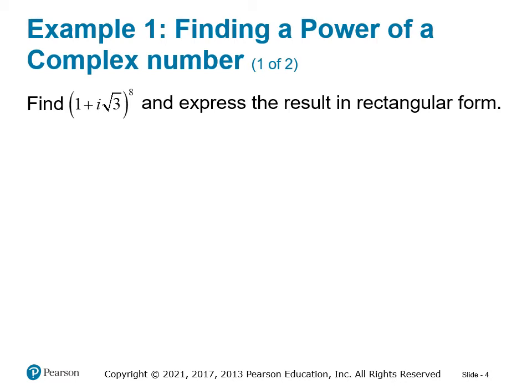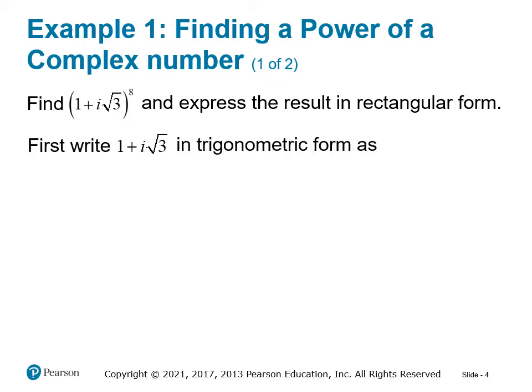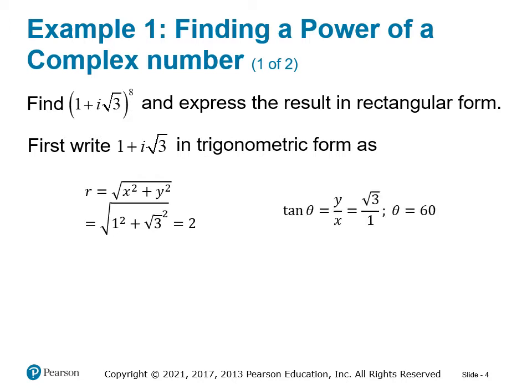Let's do an example. Find (1 + √3·i) raised to the 8th power and express the result in rectangular form. First we have to write 1 + √3·i in trig form. We know r equals the square root of x² + y², so √(1² + (√3)²) = 2. The tangent of theta equals y over x, which equals √3 over 1, giving our known angle of 60 degrees. So in trig form we get 2·cos(60) + i·sin(60), or 2 CIS 60.